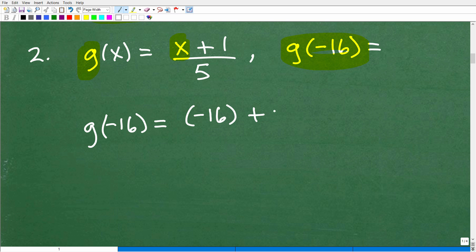So g of negative 16, I'm plugging in using parentheses negative 16 for x right there, plus 1 over 5. I'm pretty confident that I replaced this x with the appropriate value. Now I'm going to use the order of operations and my knowledge of positive negative numbers, all my math skills that I've learned up to this point to simplify this.